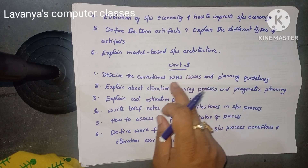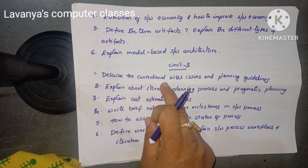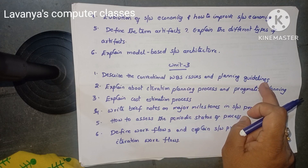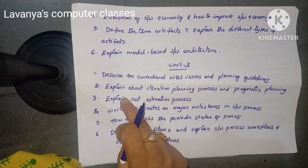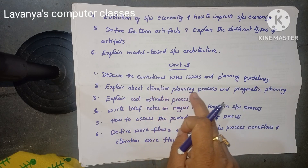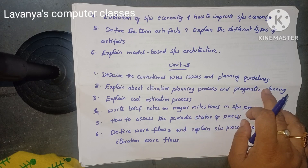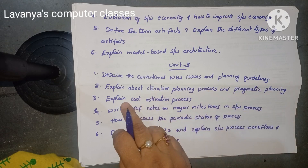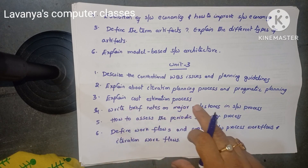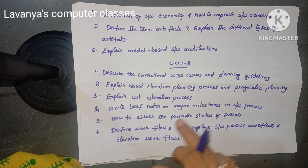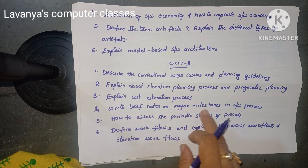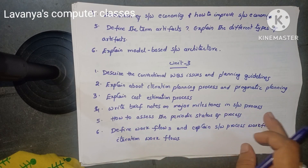Unit 3 questions: describe the conventional WBS issues and planning guidelines. Next one is: explain about iteration planning process and pragmatic planning process. Next: explain cost estimation process — important question. Write brief notes on major milestones in software process.